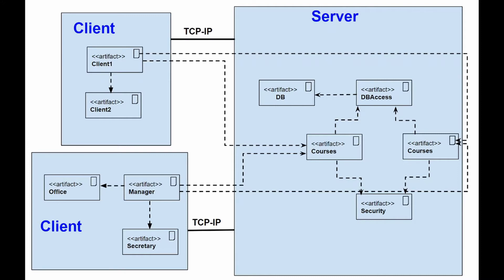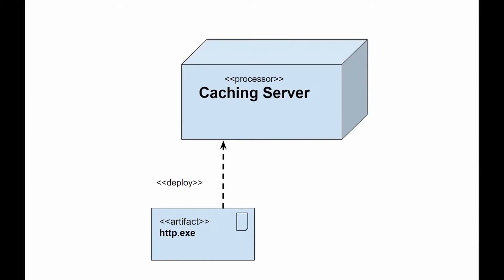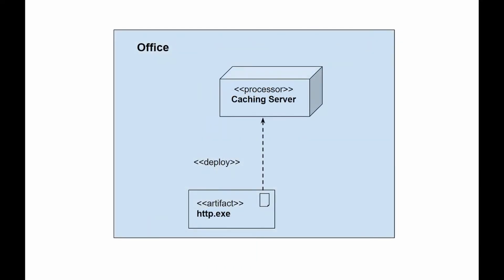Deployment diagrams usually contain the following notation. A 3D box represents a node, either software or hardware. A hardware node may be marked with a stereotype notation. Connections between nodes are represented with a line with optional stereotype notation. Nodes can reside within other nodes. The diagram can also reflect dependencies, associations, as well as notes or restrictions.